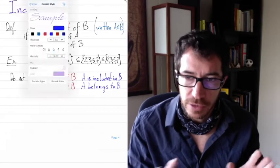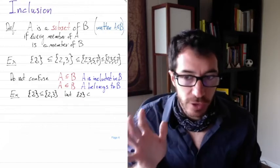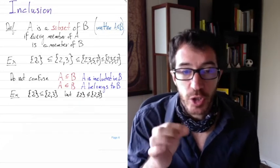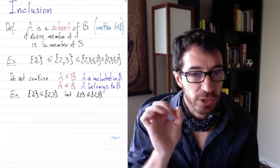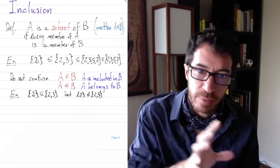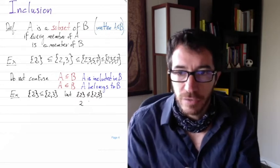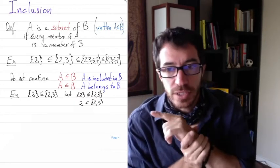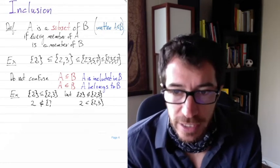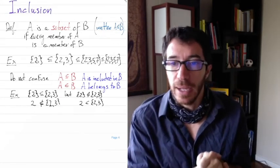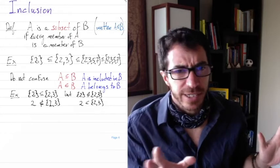The set {2} is a subset of {2,3}, but {2} is not a member of {2,3}. The members are only 2 and 3, not the set containing 2. The number 2 alone does belong to the set {2,3}, and the number 2 alone is not included in {2,3} because it's not a set itself - it's a number. Which will become sets later.